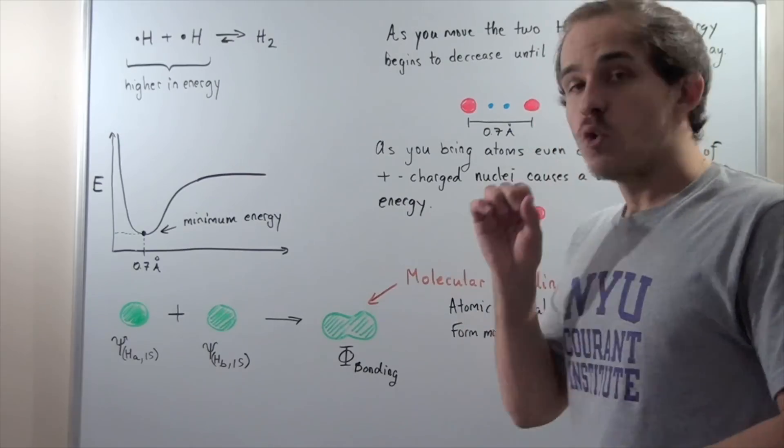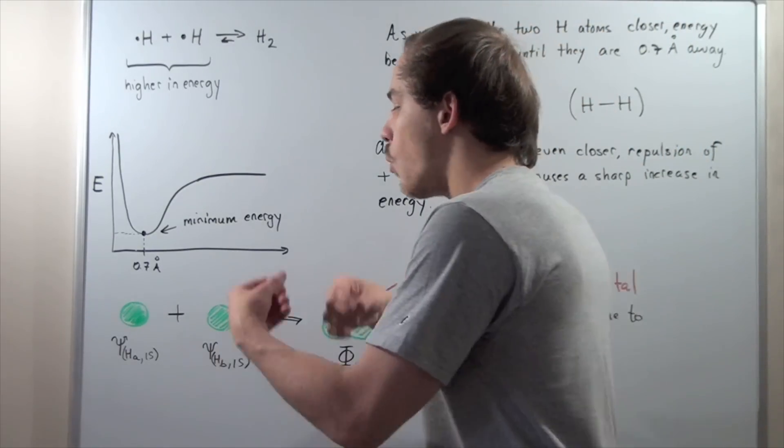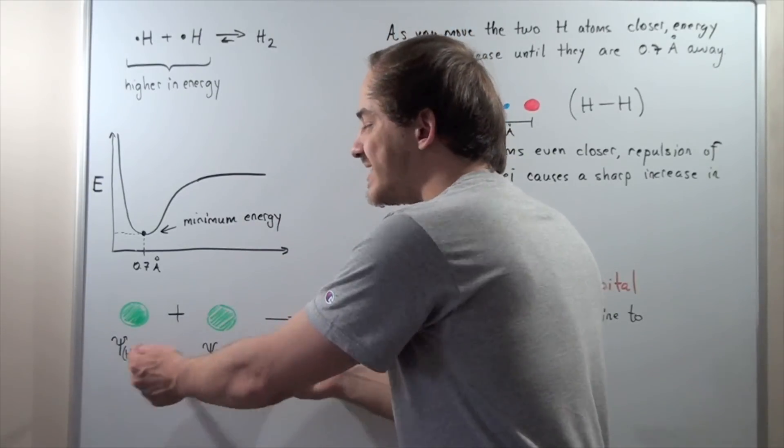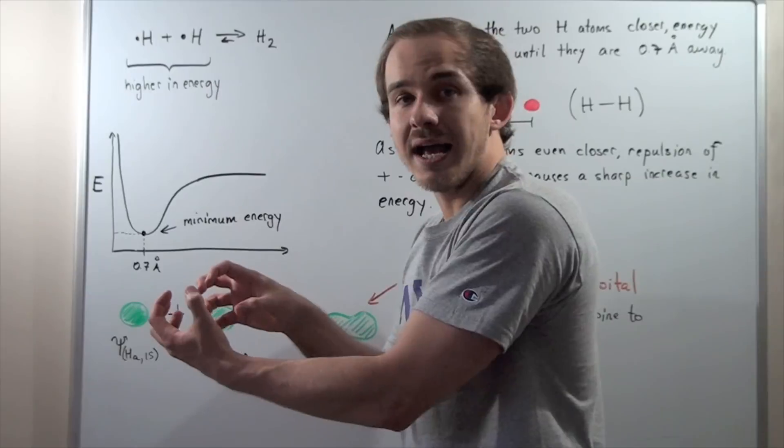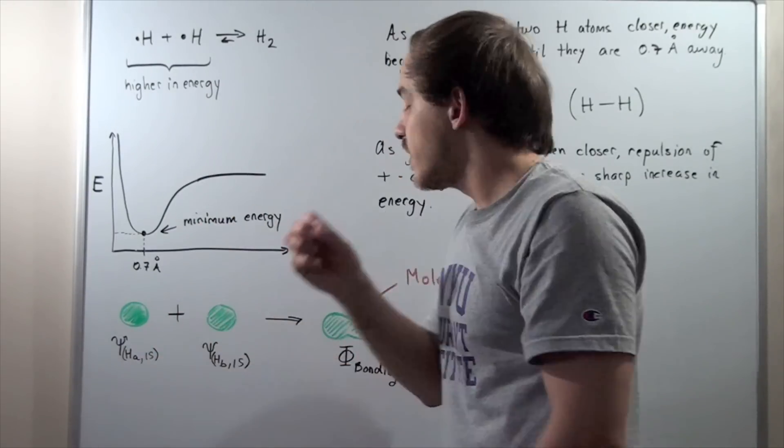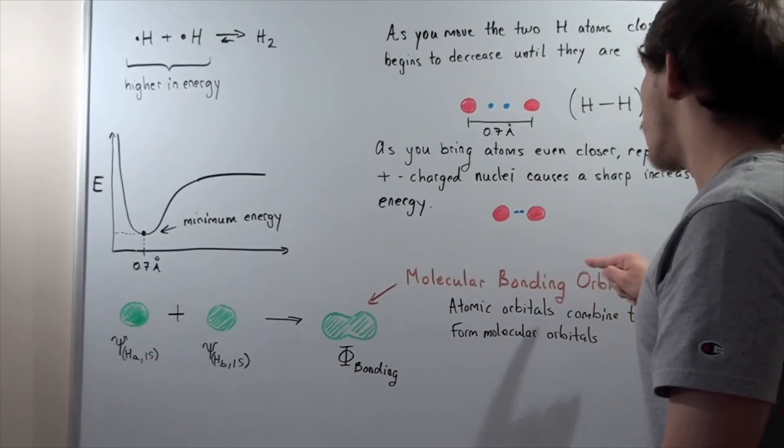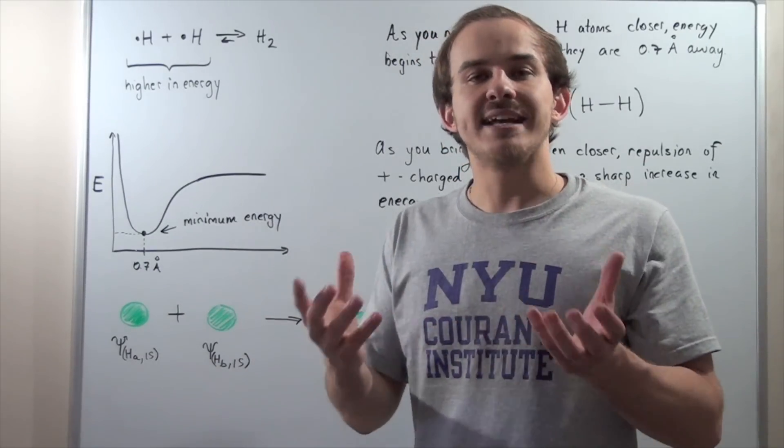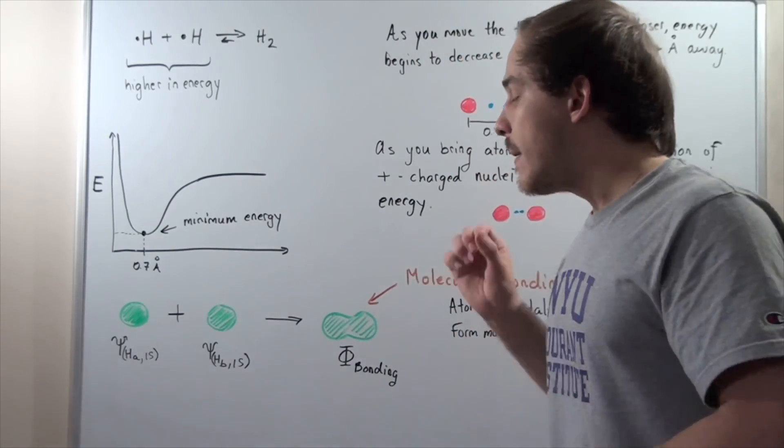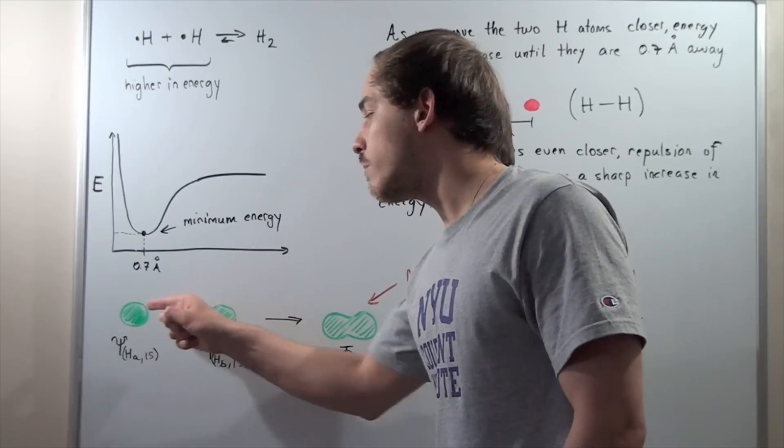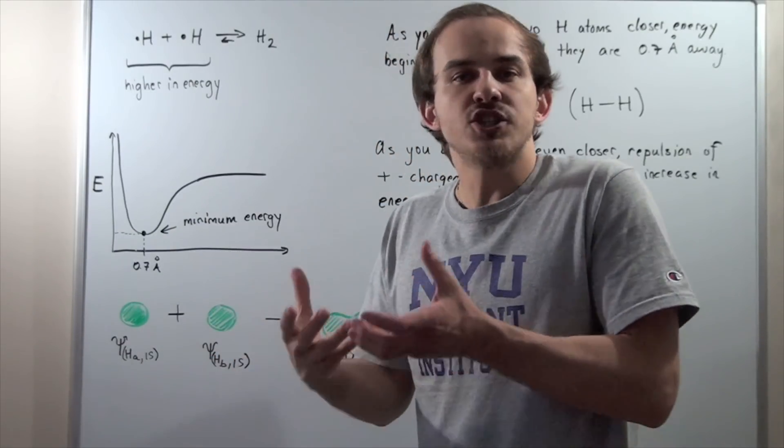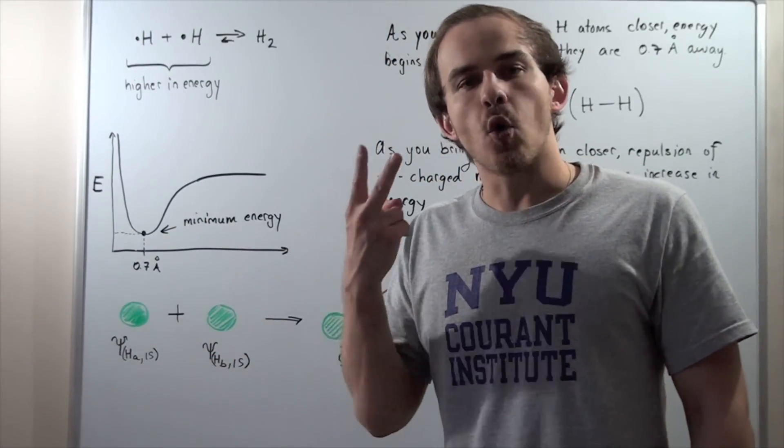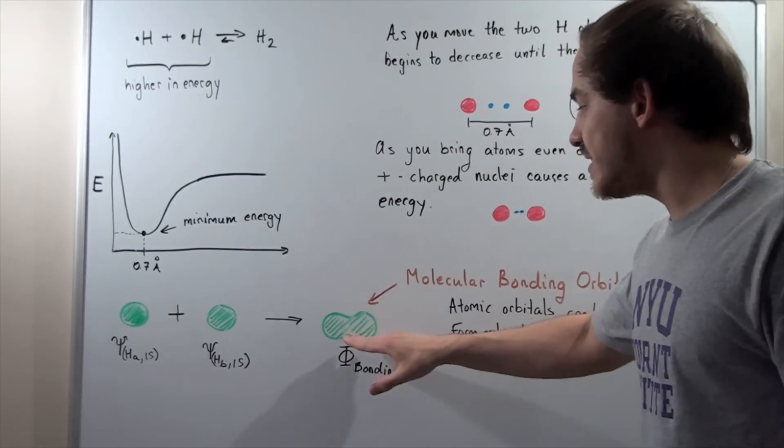From quantum mechanics, we know that whatever number of atomic orbitals that combine, they will form the same amount of molecular orbitals. In other words, there's a conservation number that we have to take into consideration. Because two atomic orbitals combine, we should form two molecular orbitals.